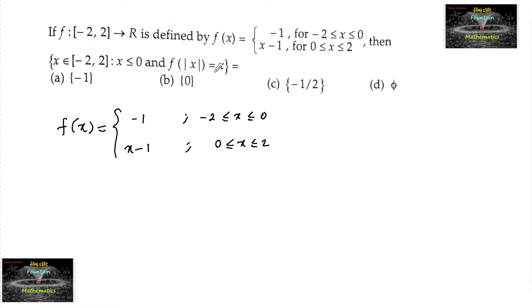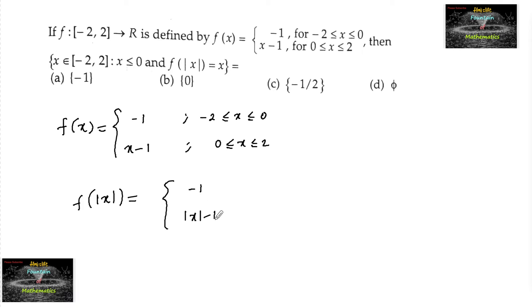So we have to find the value of x for which f(|x|) = x. From here we can write f(|x|) = -1 for -2 ≤ x ≤ 0, and |x| - 1 for 0 ≤ x ≤ 2.